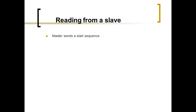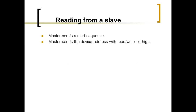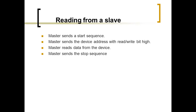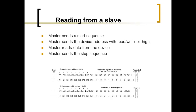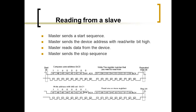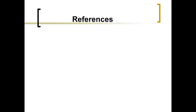Reading from the slave: the master sends a start sequence, then sends the device address with the read/write bit set high. The master then reads data from the device, and finally sends a stop sequence to end the transaction, as shown in the figure.